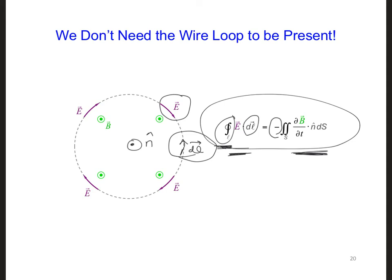If we were to define n hat to be into the screen, then the B field would be in the opposite direction of n hat. We'd get a negative sign here. Multiply that by another negative, we get a positive number. And we'd have E would be in the direction of dl.